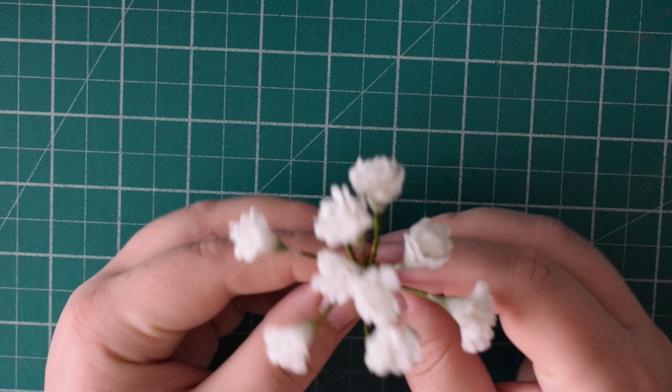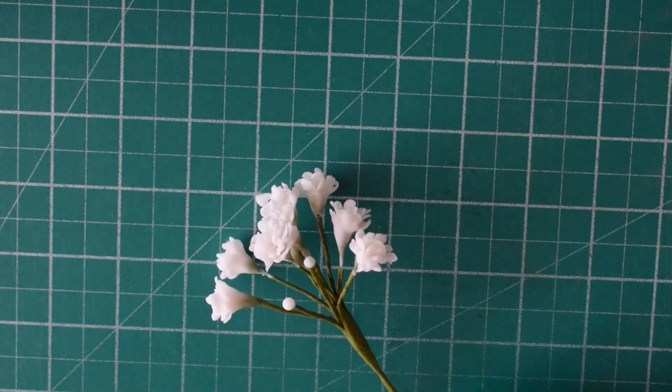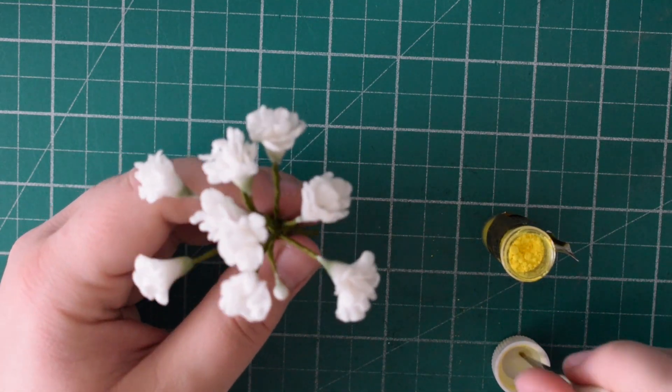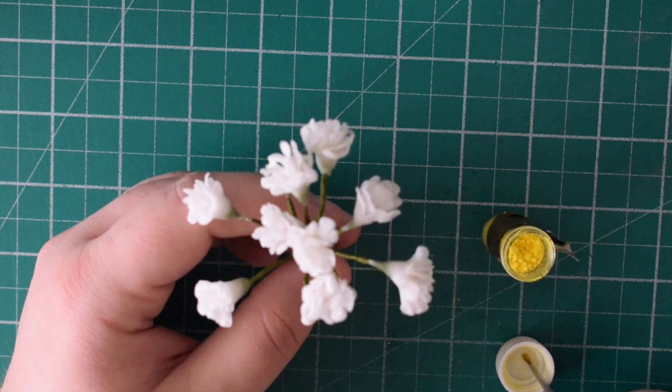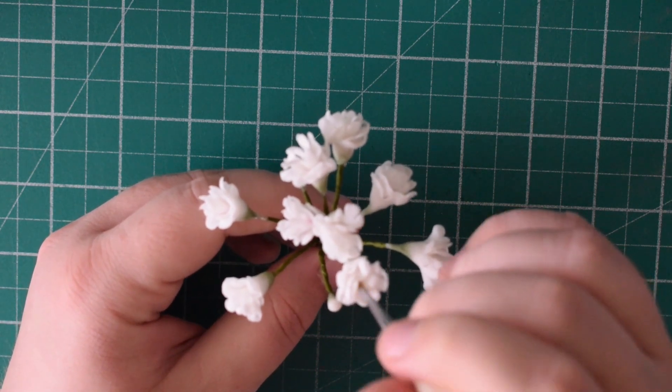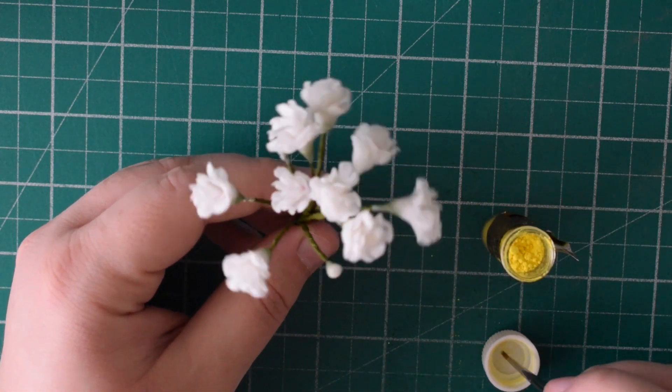And then next what we're going to do is we're just going to put the center in, so I've just got a little bit of yellow dust and I'm just going to go through and just pick the center of the flower. It doesn't have to be dead center, it could be slightly off to the side, and I'm just going to pop in some of the yellow powder.